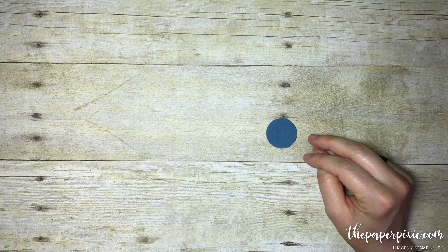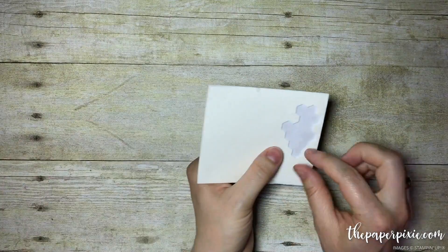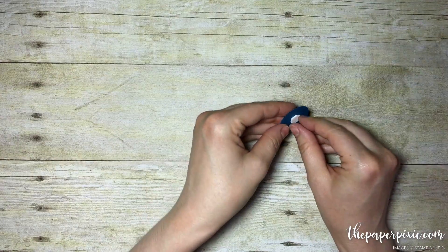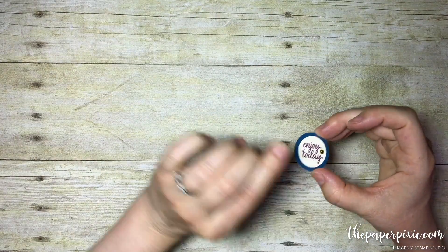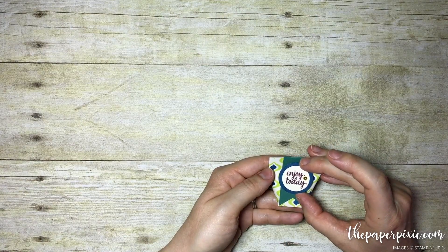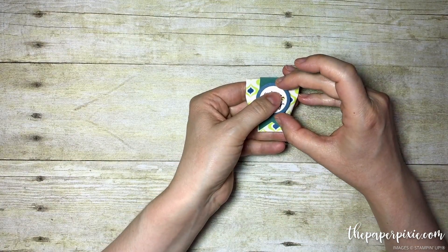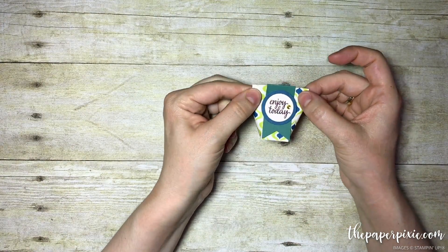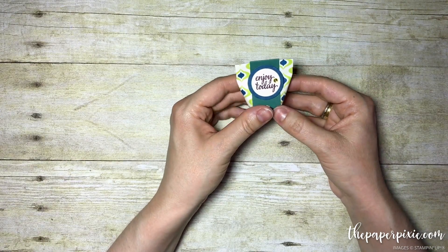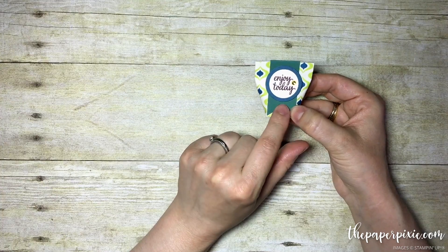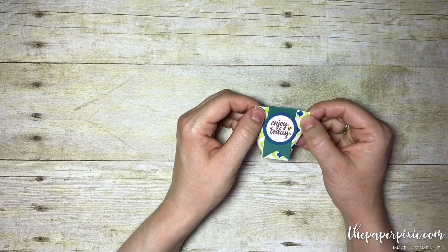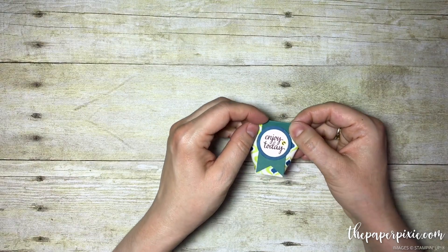On the back of that we're just going to stick one Stampin' Dimensional. This is what we're going to use to hide that staple. Just stick that centered over that banner and voila, it's done. This is such a fun and easy project. I made these in a different colorway for the Savannah On Stage event. I made about 60 of them and they came together so quickly.